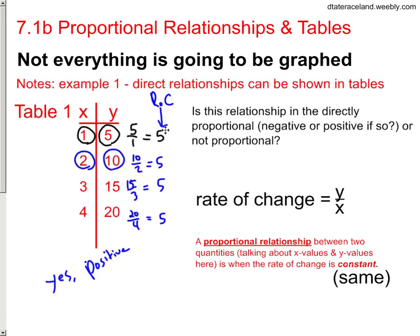So is the rate of change constant? Yeah, they're all the same. If any one of these was different, like if I made this one 14, 14 divided by 3 would not be 5, I would say it's not proportional. As long as these are all the same, you're fine.